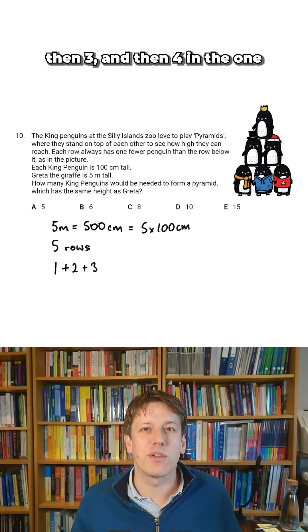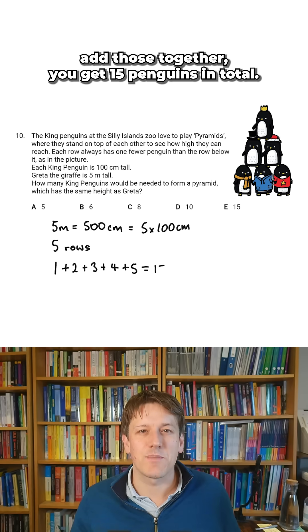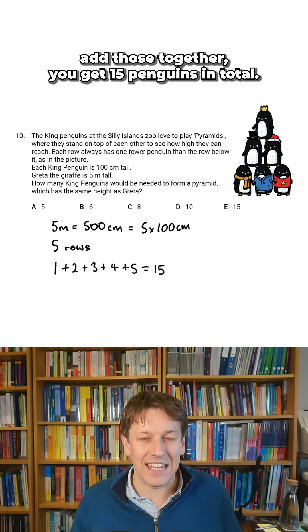There'll be 1 in the top row, 2 in the next row, then 3, and then 4 in the one below it, and 5 in the one below that. And if you add those together, you get 15 penguins in total.